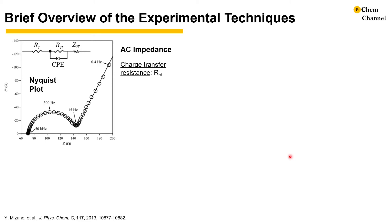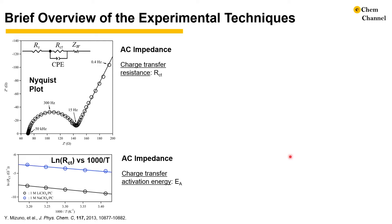Before we dive into the equations, let's briefly review the experimental techniques used to determine these parameters. Charge transfer resistance can be determined from AC impedance spectroscopy or electrochemical impedance spectroscopy. It is typically done by fitting the Nyquist plot with equivalent circuits like this one for battery electrodes. Using the charge transfer resistance obtained at different temperatures, one can determine the charge transfer activation energy.